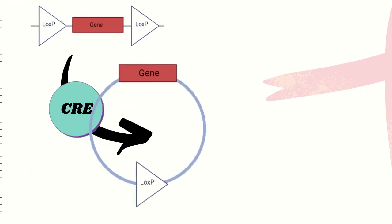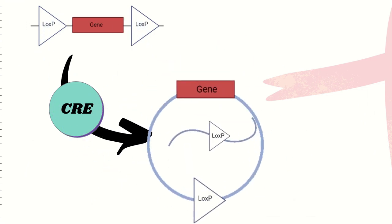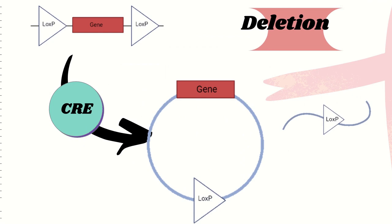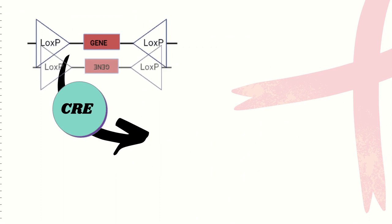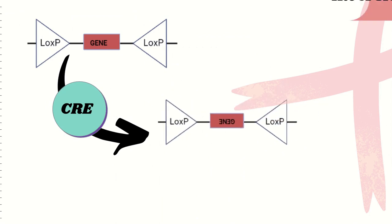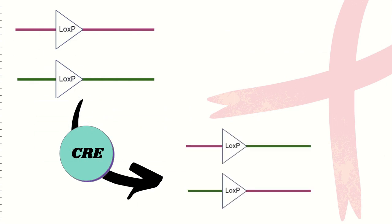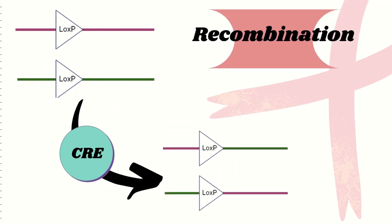Cre recombinase carries out three catalytic functions. Firstly, when two LOX P sites flanking a gene are oriented in the same direction, Cre recombinase cleaves between the two LOX P sites, leading to circularization and deletion. Secondly, when two LOX P sites flanking a gene are oriented in the opposite direction, Cre recombinase causes inversion between the two LOX P sites. And lastly, when LOX P sites are present on different sequences, Cre recombinase will cause recombination between the two sequences.